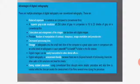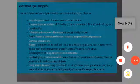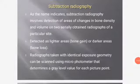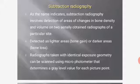During implant placement, conventional film disrupts the entire aseptic procedure and wastes time while the clinician awaits film development multiple times. Subtraction radiography involves detection of areas of changes in bone density and volume on two serially obtained radiographs of a particular site—detected as lighter areas (bone gain) or darker areas (bone loss). Radiographs taken with identical exposure geometry can be scanned using a micro-photometer that determines a gray level value for each picture point.